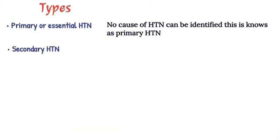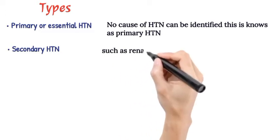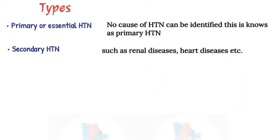Secondary HTN: In about 5% of cases, the cause can be discovered. It is often caused by underlying medical conditions such as renal diseases, heart diseases, etc.